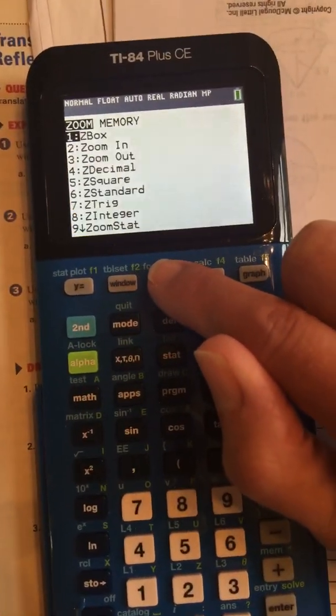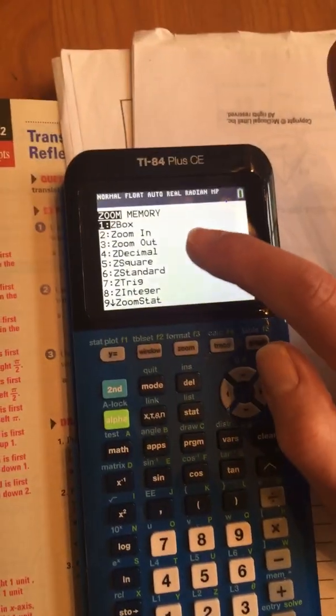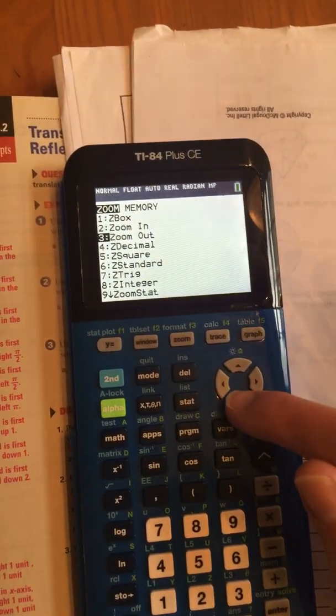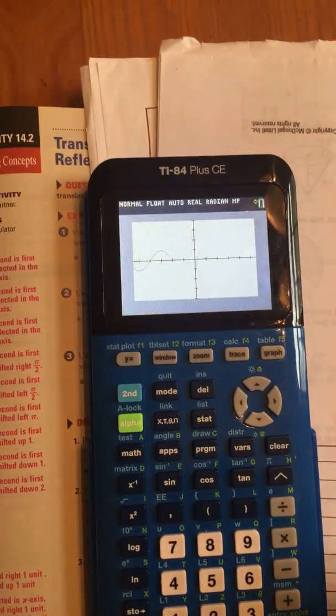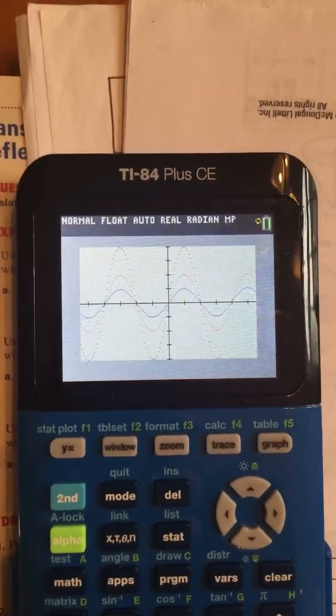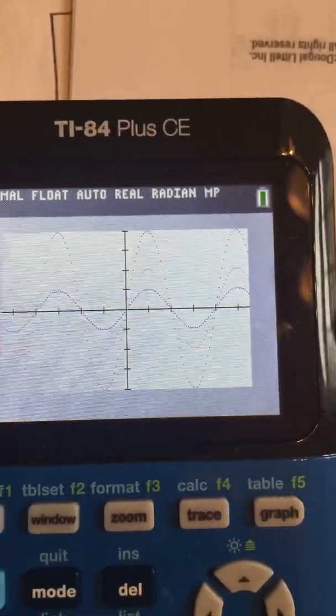Okay, now for your viewing window you need to go to zoom trig number 7. We'll give you a good window there. And there's the first one, the second one, and the third one.